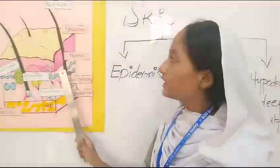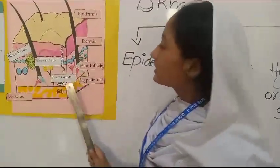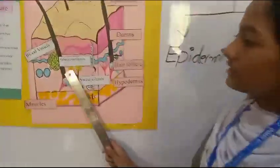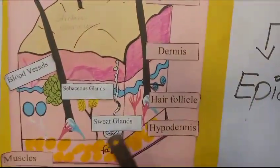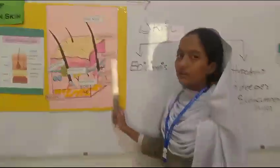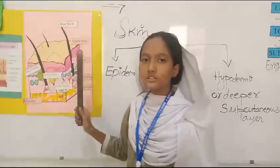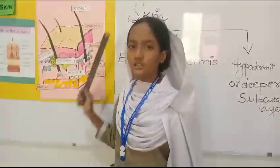Dermis contains hair follicles. You can see that. These are sebaceous glands, sweat glands, and blood vessels. These are all present in the second layer of human skin, called dermis.